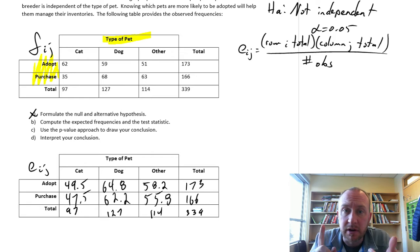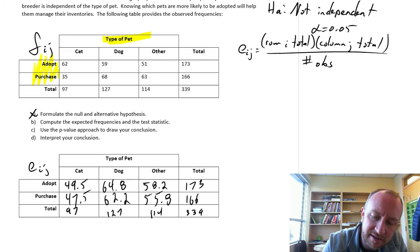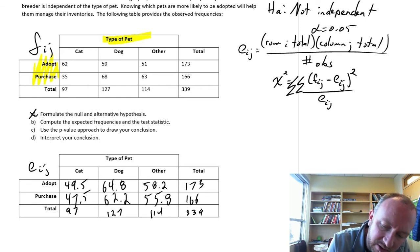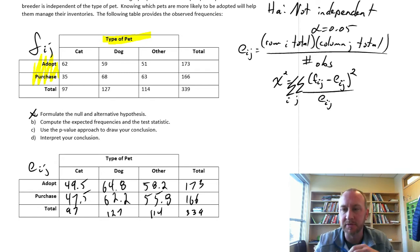Okay, so we have our observed frequencies. We have our expected frequencies. Now we can calculate our test statistic, which is going to be this chi-squared value. We're going to look at the differences between our observed value and the expected value. We square it,